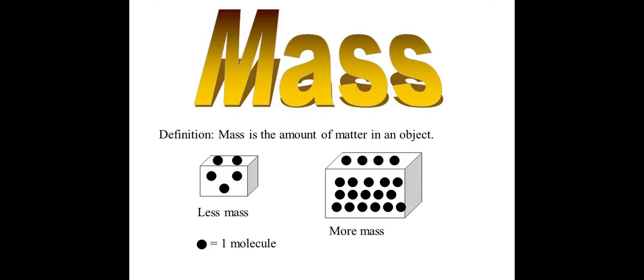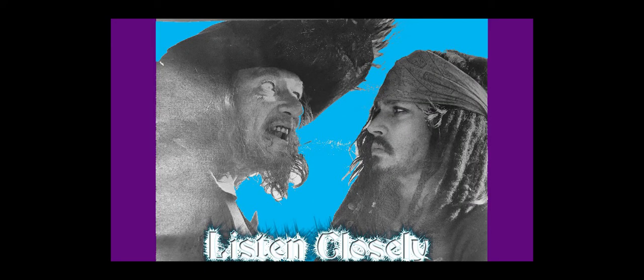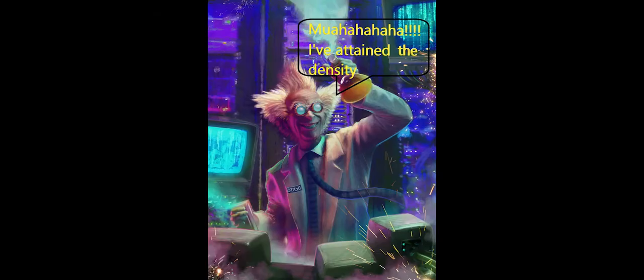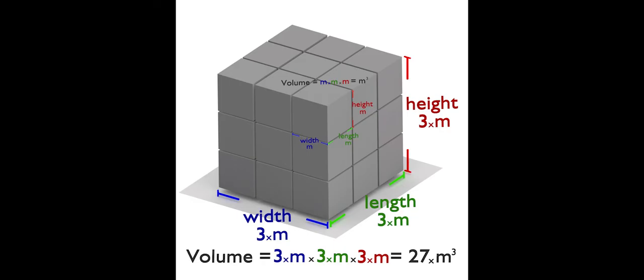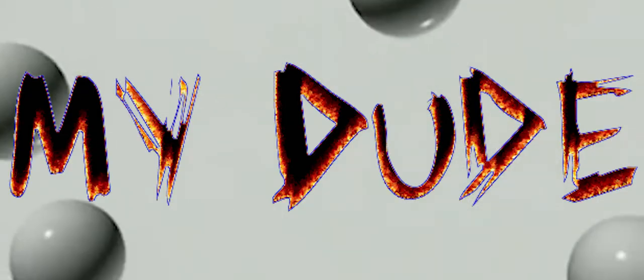Mass is the amount of matter that an object contains. Listen closely and soon enough the density you'll attain. The volume can be measured by a few different means. For a symmetrical object, multiply length times width times height. If the object is solid, the unit is centimeters cubed. If it's liquid or a gas, it's milliliters — that's the unit, my dude.